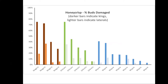For Niagara, Orleans, and Wayne counties there's damage in many blocks, but it varies considerably. In the darker bar on the left we have king flower damage — some Niagara blocks have more than 70% damage to kings while others have 40% or less. Niagara County generally has more damage than Wayne County. In Orleans, five blocks were evaluated; one had more than 70% king damage on Honeycrisp, but one had only 5%. In Wayne County, no blocks had that really high level of 70–80% damage; a couple had around 40% and some had essentially none.